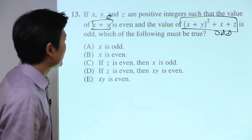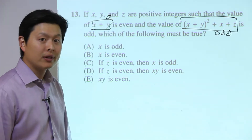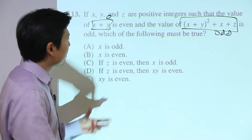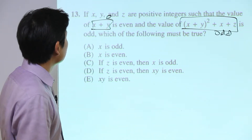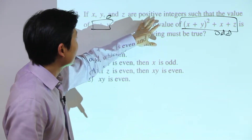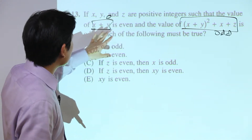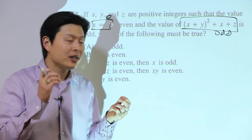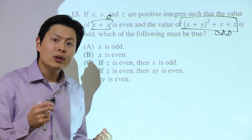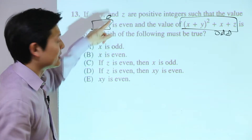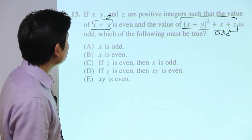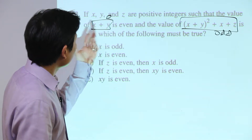This is again a must-be-true question. We're not told whether x, y, and z are individually even or odd. We only know that x plus y is even. That means x and y could both be even, or both be odd — either way their sum is even. We don't know anything about x, y, or z individually.